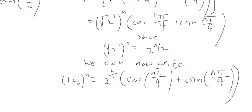How do we interpret this? The factor 2^(n/2) gives the modulus — the absolute value of (1 + i)^n — which is especially useful when comparing the sizes of complex numbers or when computing norms. The modulus formula for complex numbers is very important.